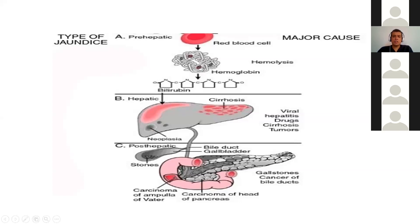Post-hepatic jaundice is mostly dealt with by surgeons. The bile flows down, and if there is any obstruction in its flow, it may cause obstructive jaundice. It could be because of a stone, carcinoma causing obstruction, carcinoma of the head of the pancreas — many causes in the post-hepatic region which can be corrected surgically.